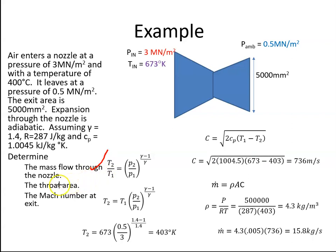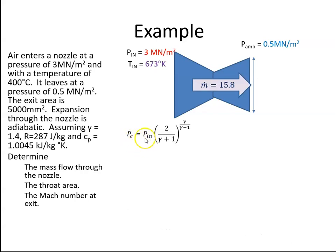Second part is: what is the throat area? At the throat, the airflow is choked, so we have the speed of sound right here. We also have the critical pressure, so we need to calculate it. The critical pressure formula: the pressure in is 3 MN, plug that value in, and we get the critical pressure to be approximately 158.5 kN. Actually 158.484, but I've rounded up here.